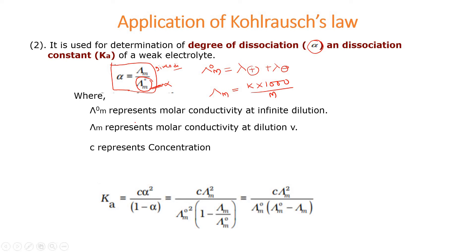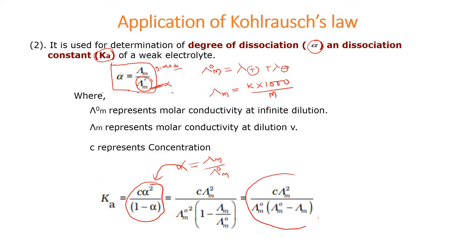Next, the dissociation constant Ka we can also calculate using the degree of dissociation. The formula is: Ka = C·α² divided by (1 − α). You substitute the alpha formula — lambda M by lambda naught M — here, but it's simpler to directly calculate alpha first and then substitute its value to get the dissociation constant.